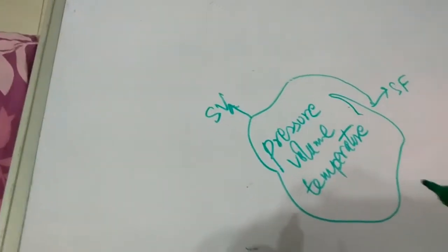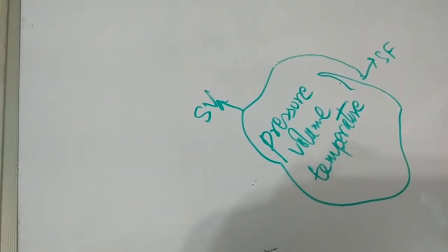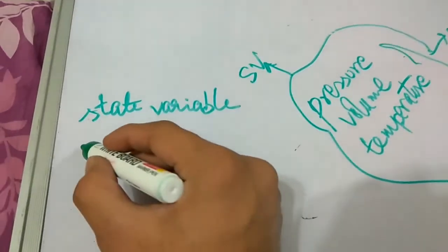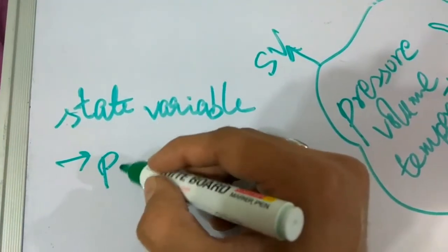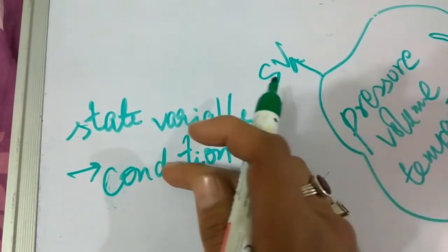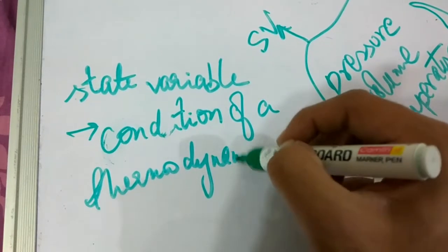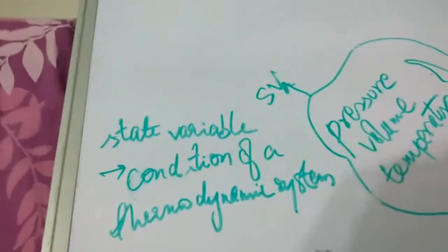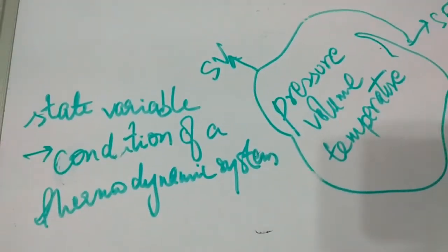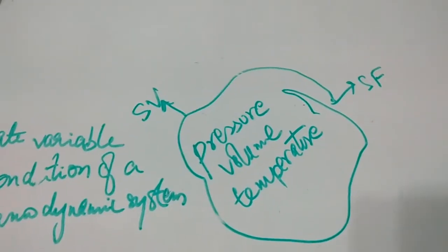A state variable is something which describes the condition of a thermodynamic system — the present condition of a thermodynamic system. That is a state variable. So a state variable describes the present state of a thermodynamic system. That is the job of a state variable, which are pressure, volume, and temperature. These are state variables. And how are these state functions also?